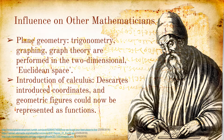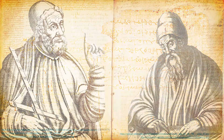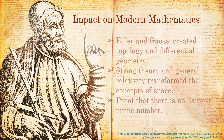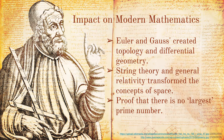With Descartes' introduction of coordinates, a new era for geometry had been marked, as geometric figures could now be represented as functions, which led to the emergence of calculus in the 17th century. Through Euler and Gauss' examination of geometric objects in their structures, the creation of topology and differential geometry occurred. More recent physical theories, such as string theory and general relativity, are also geometric in nature and have radically transformed the concept of space.